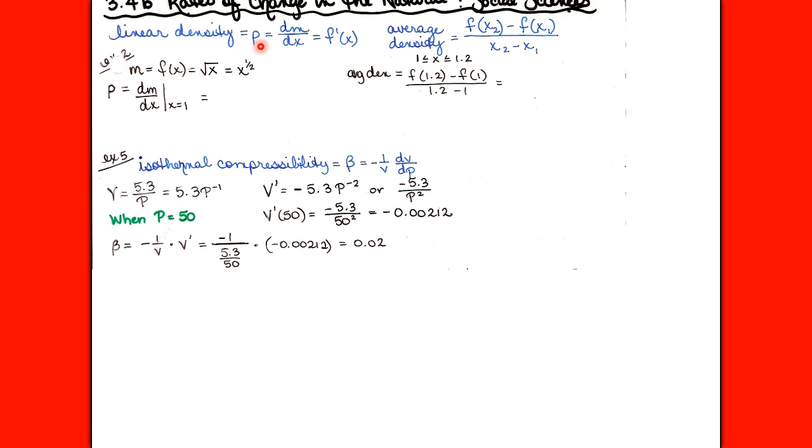The rate of change of density with respect to position gives the instantaneous density at an exact spot — that's a derivative. That's called the linear density. Linear density is the limit of average densities, i.e., the rate of change of mass with respect to length: dm/dx.